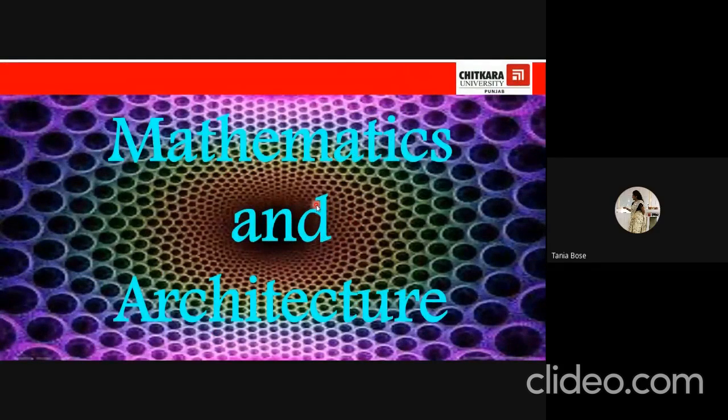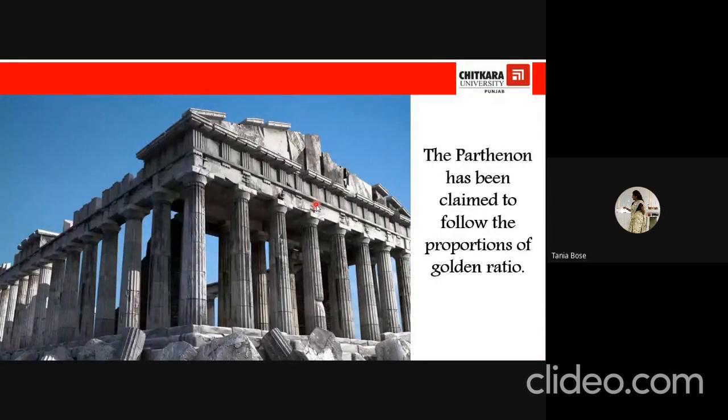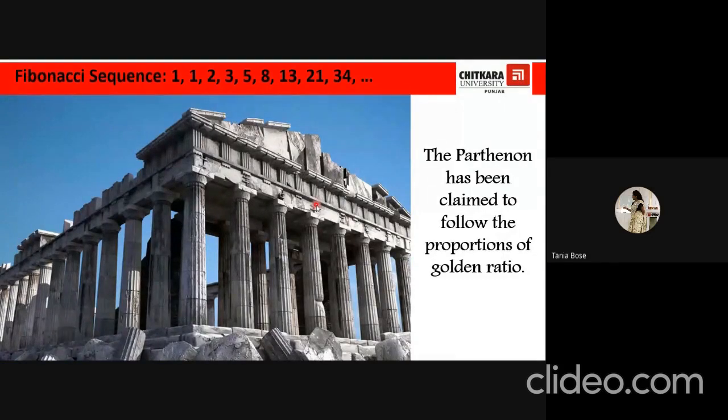So now let's see what was the relationship of maths with architecture? Now, the ancient architecture was mainly based on Pythagoras' theorem and the golden ratio. We have many famous monuments which have the concept of golden ratio. The Parthenon, we have claimed to follow the proportions of golden ratio. Now, what is this golden ratio all about? We might have read about this golden ratio, but many of us have never bothered to know what is this golden ratio.